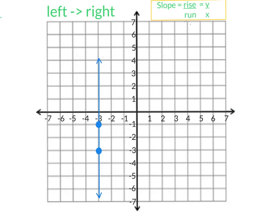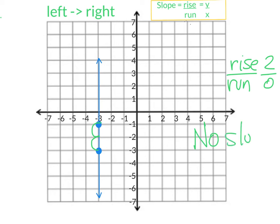Here I'm rising one, two. But I'm not running anywhere — both points are at negative three. So I have two over zero. This is going to be no slope. Remember, in the word 'no', we have lines that are vertical, just like our vertical line here.